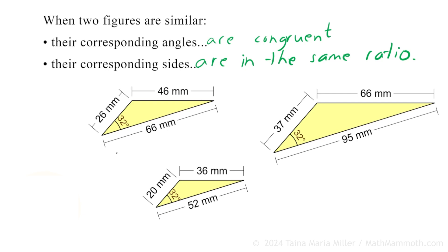Now the sides differ in length, but they are in the same ratio. Let's take the biggest triangle versus the smallest one and make ratios of the sides — for example, 95 to 52. That would be one ratio, and it's equal to any of the other ratios, like 66 to 36. Those two are corresponding sides also, and this would be equal to the ratio of the third sides: 37 to 20.